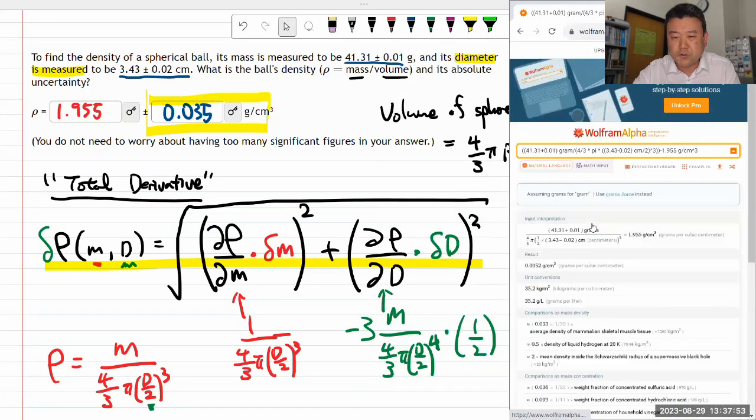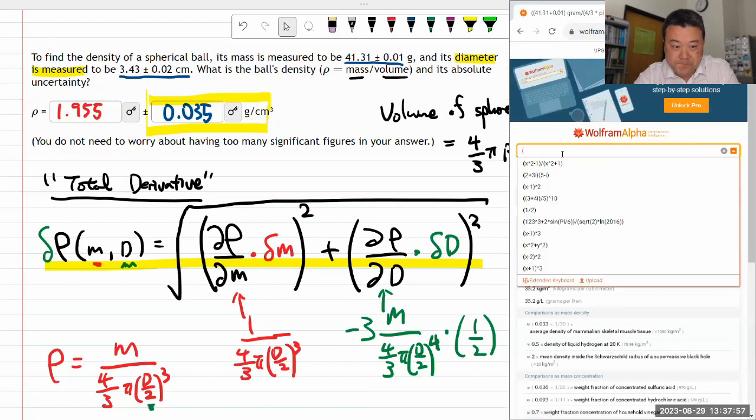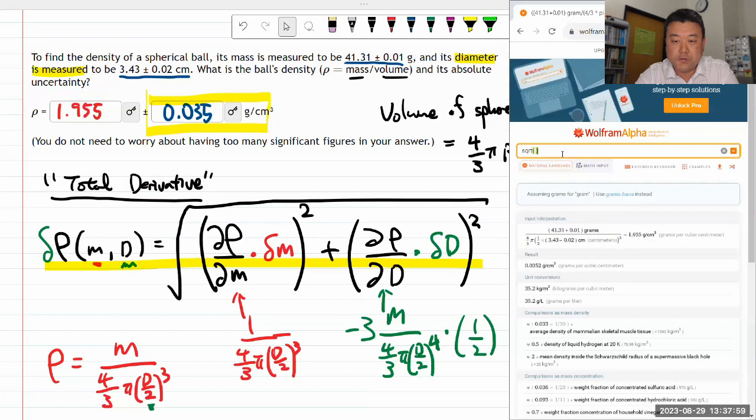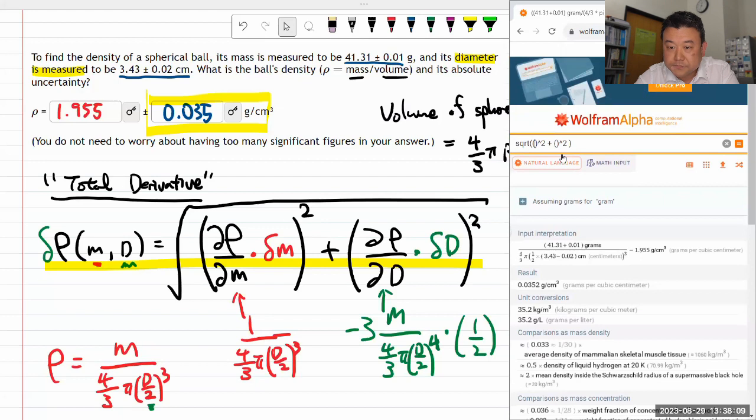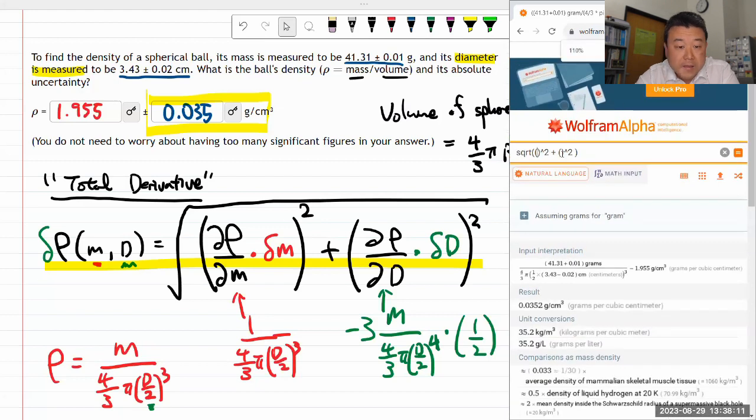I'm going to need the square root on the outside eventually, and on the inside I'm going to have two terms that are being squared. This first term that's being squared will have 1 / (4/3 π times d, which is 3.43, divided by 2) to the third power.